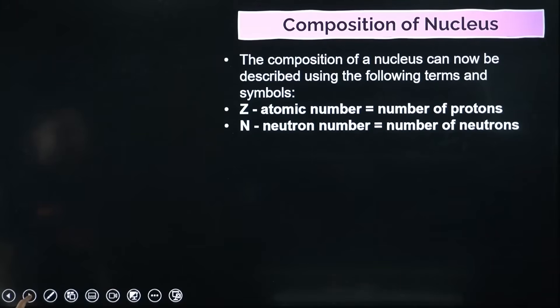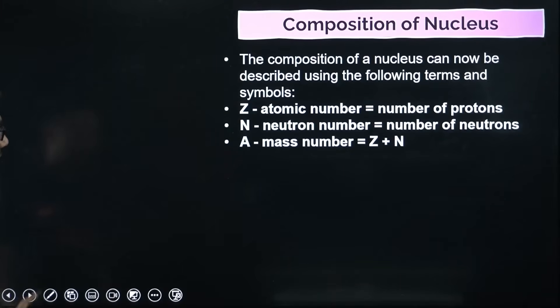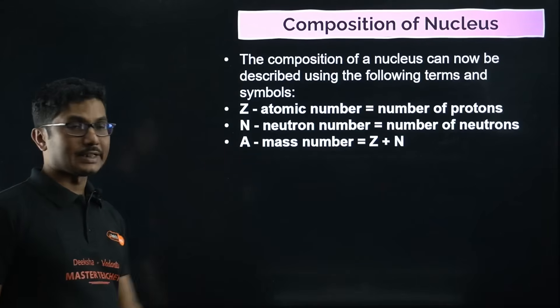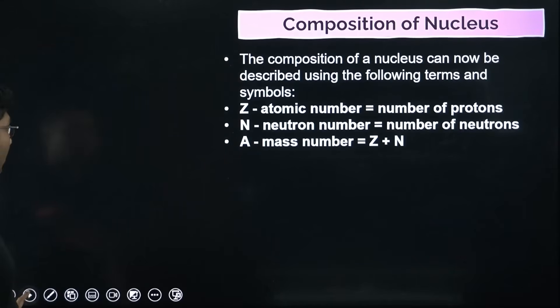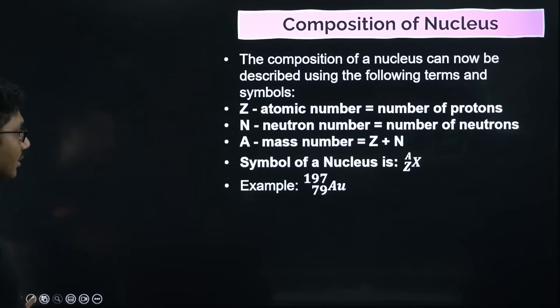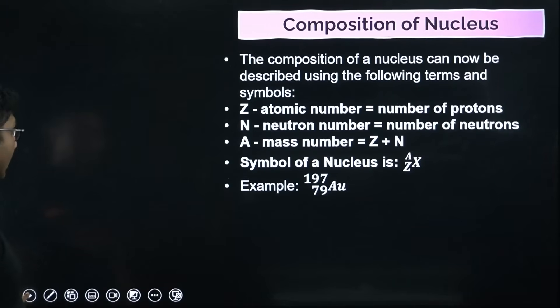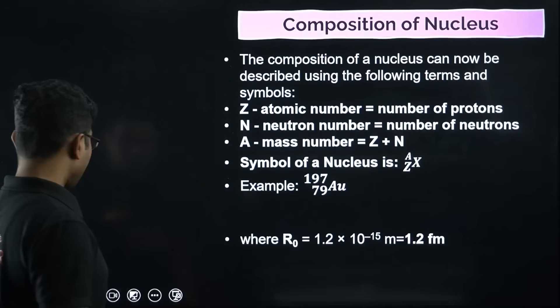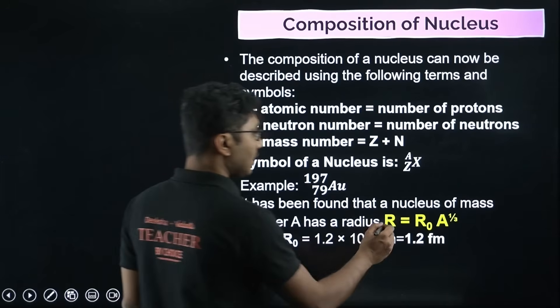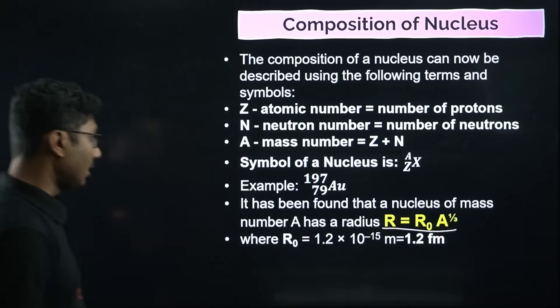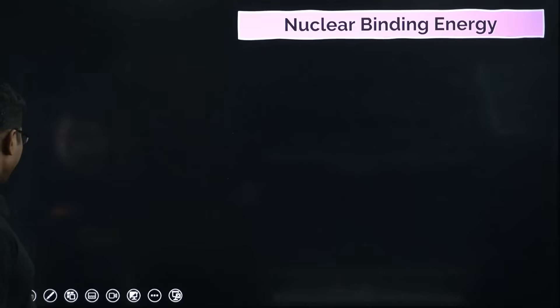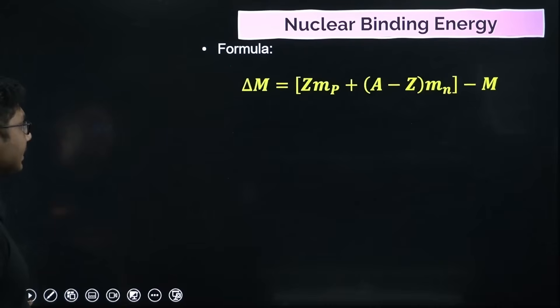In the nuclei chapter, you have mass defect, composition of nucleus. Z is atomic number, N is neutron number, A is mass number. Mass number is basically N plus Z. You have symbol for nucleus, examples as well. This constant - radius for atom, radius for nucleus - everything is given in this sheet.